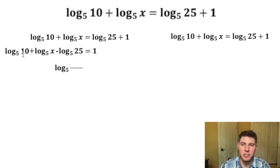Everything with a plus will be on top, so we'll have a 10 on top and an x on top, and then this 25, since it's part of a negative log, is going to go on bottom. And then that's all still equal to 1.